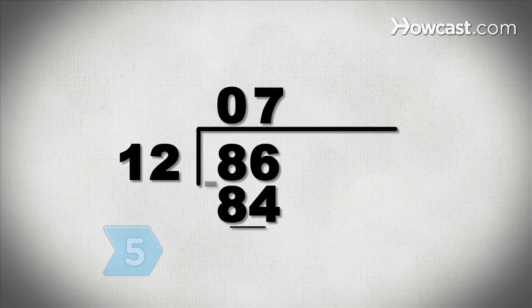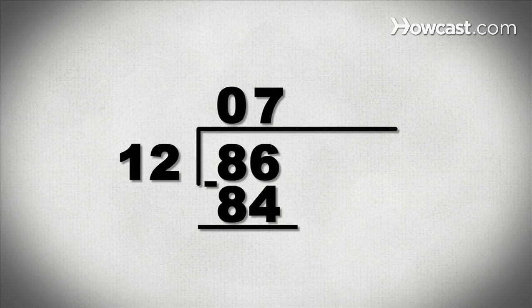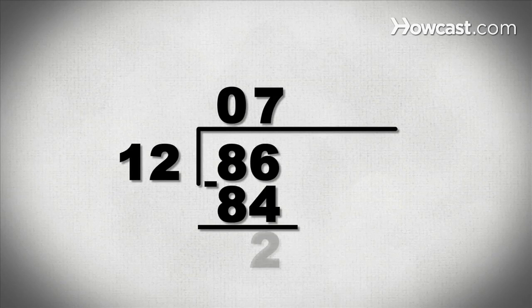Step 5. Subtract the product from the divided portion of the dividend and write the result underneath. In the example, you will place the difference between 86 and 84, the number 2, under the number 4 in 84.